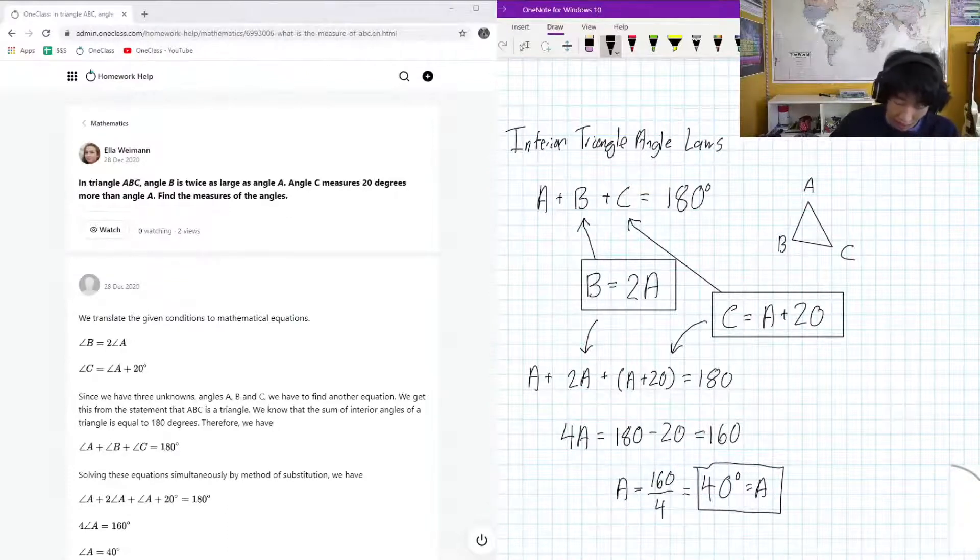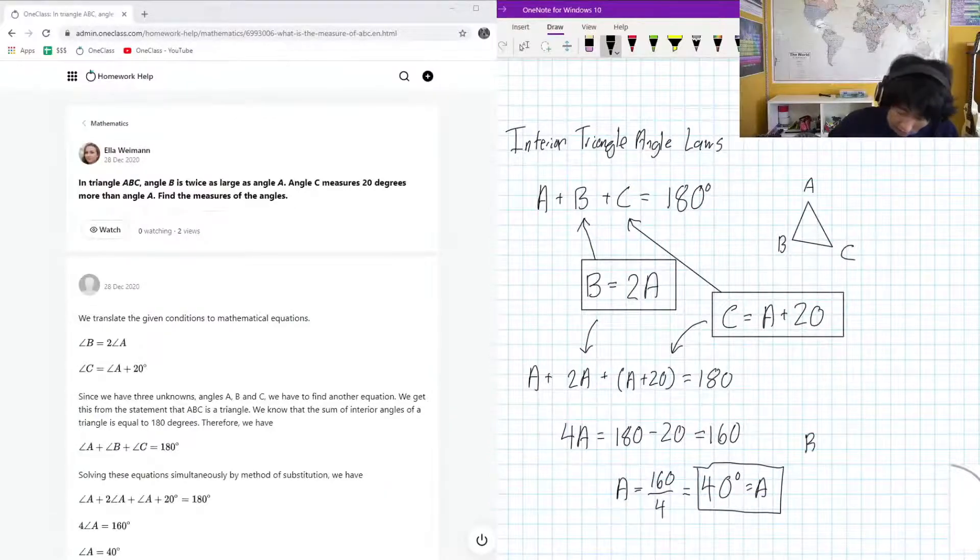And now that we know that A is equal to 40 degrees, we know that B is equal to 2 times A, which is equal to 2 times 40 degrees. So B, that's 80 degrees. Looks good to me.